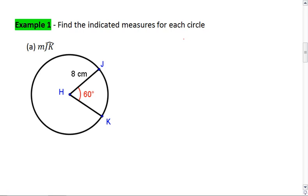We want to find the indicated measures for each circle. In this first one, we're going to find the measure of arc JK, given the angle JHK is 60 degrees, and the radius of the circle is 8 centimeters.